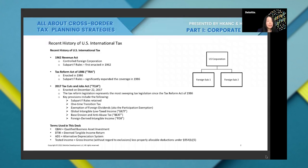Now, let's assume foreign sub two doesn't generate any Subpart F income — it only generates non-Subpart F income. Under the 1986 Tax Reform Act, the U.S. does not have the right to tax earnings by foreign sub two unless there is an actual repatriation back to the U.S. So earnings from foreign sub one are taxed in the U.S. currently, while earnings from foreign sub two are deferred until actual cash repatriation.